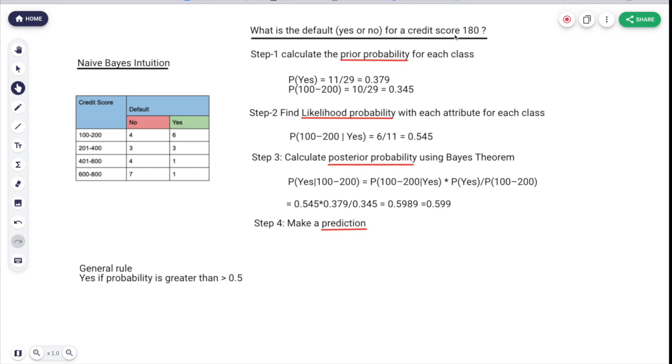So this is the basic understanding of Naive Bayes. You can apply it anywhere wherever the classification problem is there. In the next video, we will be going to implement it in Python from the first step to last step. Thank you.